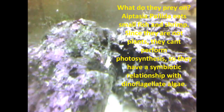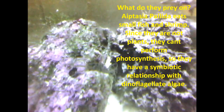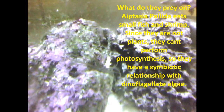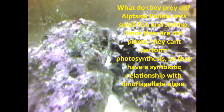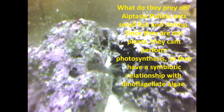What do they prey on? Aiptasia pallida eats small fish and shrimp. Since they are not plants, they can't perform photosynthesis, so they have a symbiotic relationship with dinoflagellate algae.